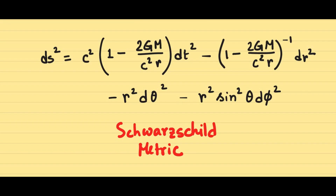Ladies and gentlemen, in a previous video I have talked to you about how to derive the Schwarzschild metric for a Schwarzschild spacetime around a spherically symmetric object. If you haven't seen that video already, I'll link it in the description and there should be a pop-up link appearing now. In this video, we're going to delve right into the physics of the Schwarzschild spacetime, and the best way to do that is to examine the phenomenon of gravitational redshift in this Schwarzschild background.